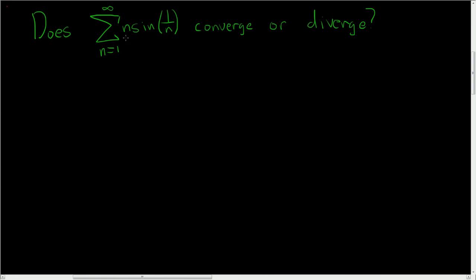So to use the nth term test, we look at a sub n, which is this, and we take the limit. So the limit as n approaches infinity of n times the sine of 1 over n. We have to compute this limit.